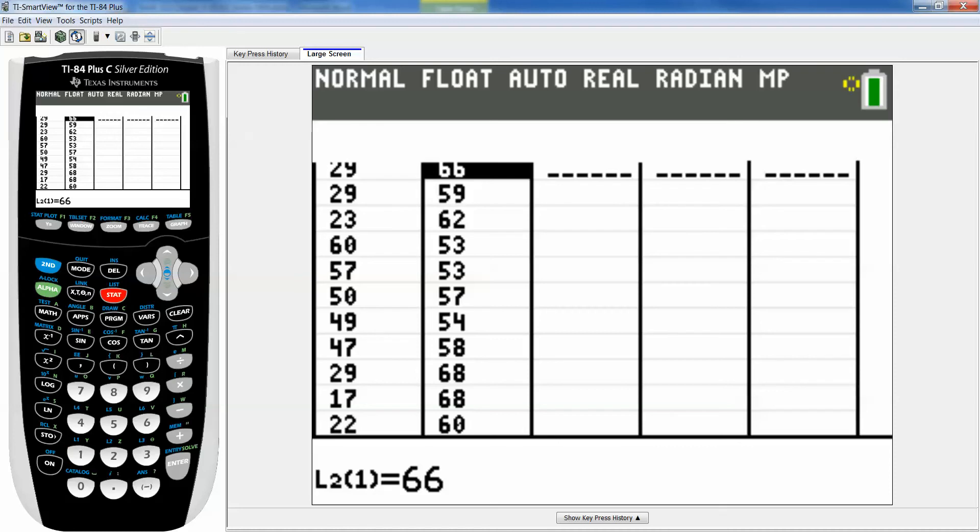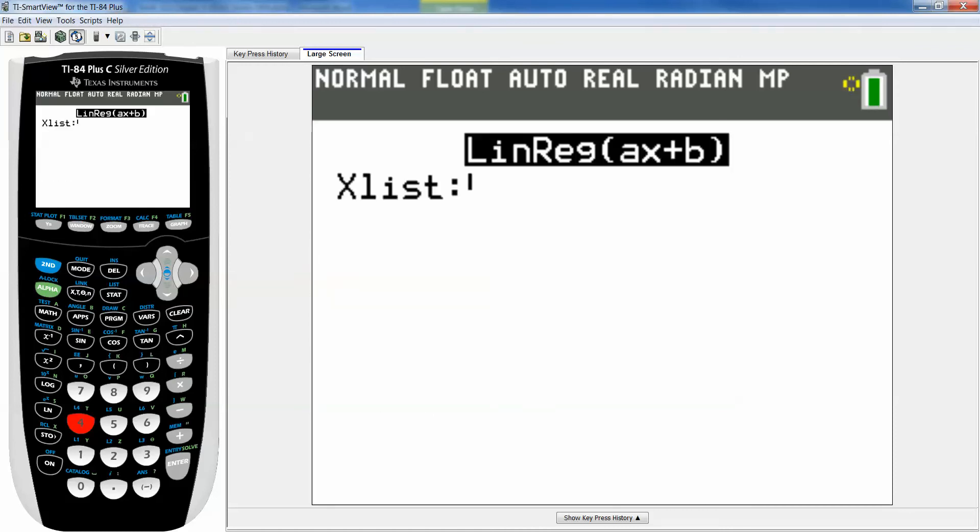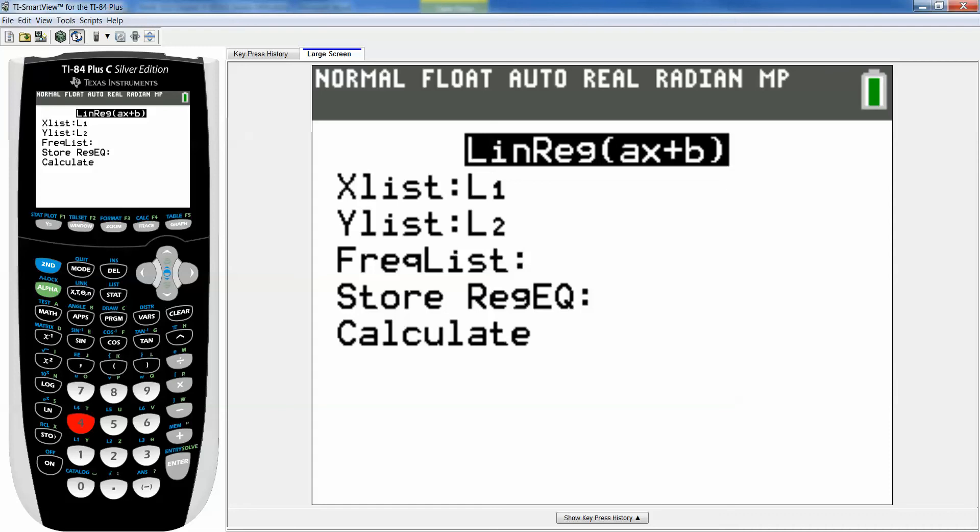Once I have the data entered I press stat then move to the right to calculate and number four. So you can either go down and get the highlight so that it's on number four, or you can actually just press four and it'll happen automatically. And then you want your X list to be L1 because that's what your explanatory variable was in, and then your response variable was in Y so that's your L2.